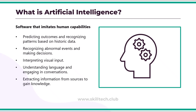Let's start with fundamental AI concepts. The first thing we need to understand is what artificial intelligence is. The definition says it is software that imitates human capabilities. We have software applications and devices integrated with AI that try to mimic human capabilities. These applications can predict outcomes and recognize patterns based on historical data, and then give you an answer based on processing that data. AI is also going to help you recognize abnormal events or make decisions.